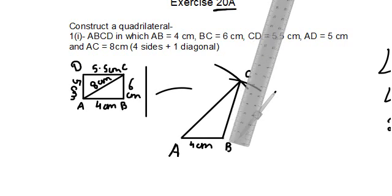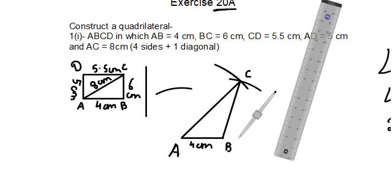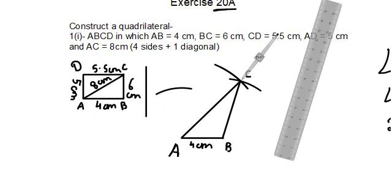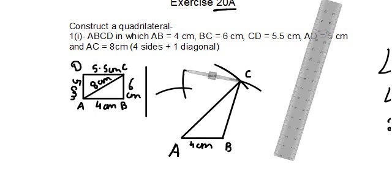The next step is to cut a final arc at point C to locate point D. CD is 5.5 cm, so keep your compass at point C, open it to 5.5 cm, and cut an arc. This arc intersects the earlier arc from A for AD — that intersection is point D.